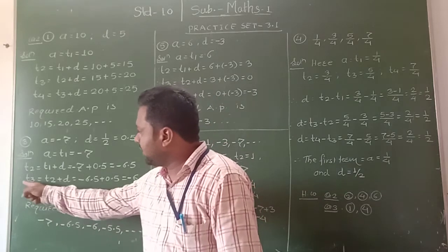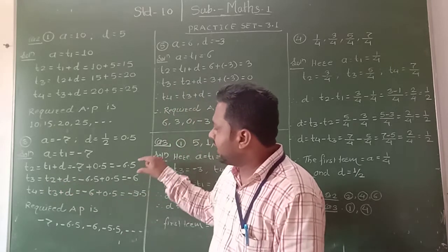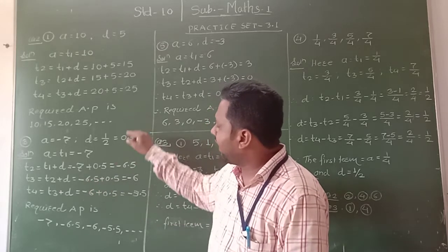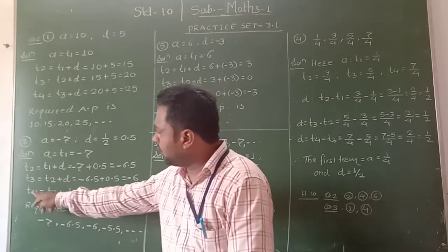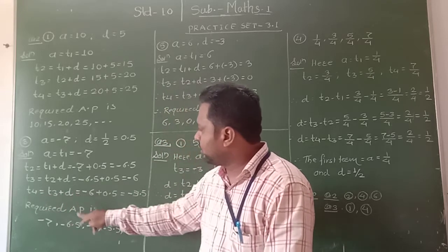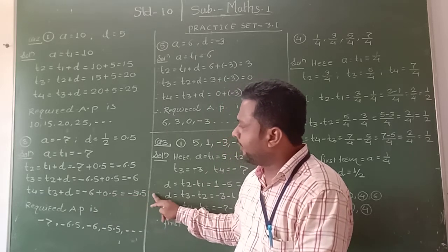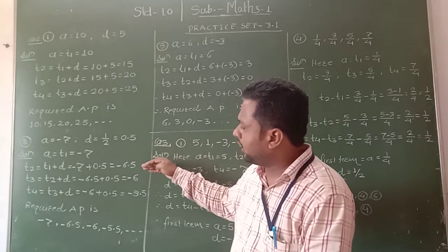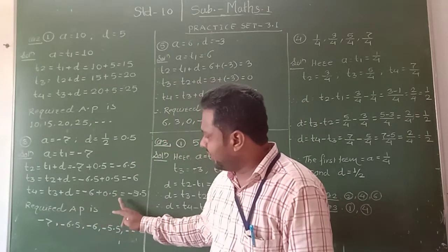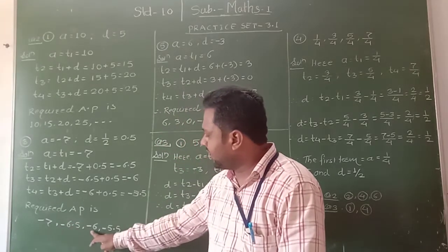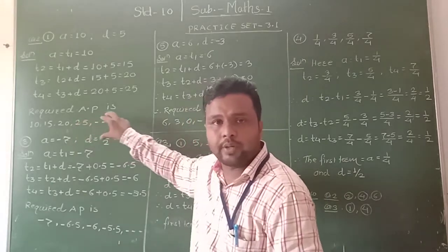Then the third term T3 is equal to T2 plus D, which is minus 6.5 plus 0.5, equal to minus 6. Similarly, the fourth term is T3 plus D, which is minus 6 plus 0.5, equal to minus 5.5. Therefore, the required arithmetic progression is minus 7, minus 6.5, minus 6, minus 5.5, and so on. In this way we get the arithmetic progression when the first term and common difference are given.